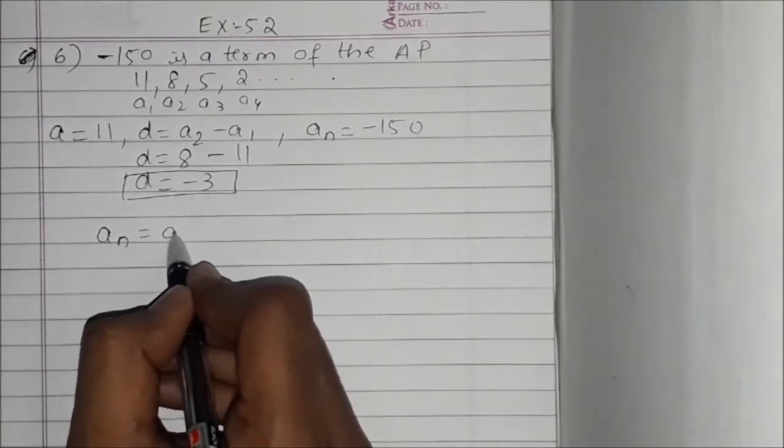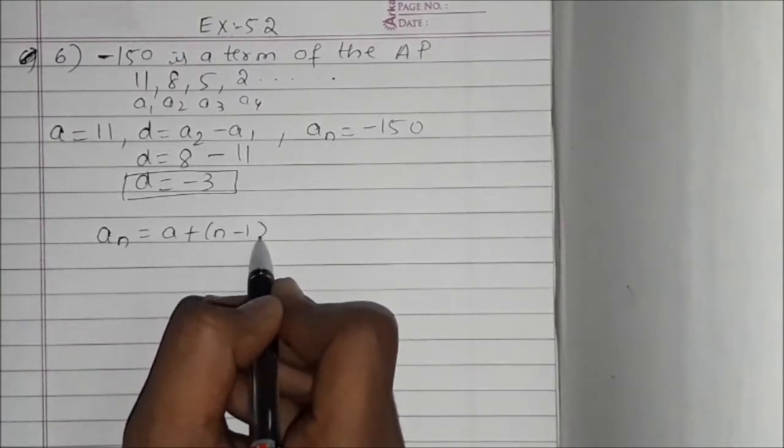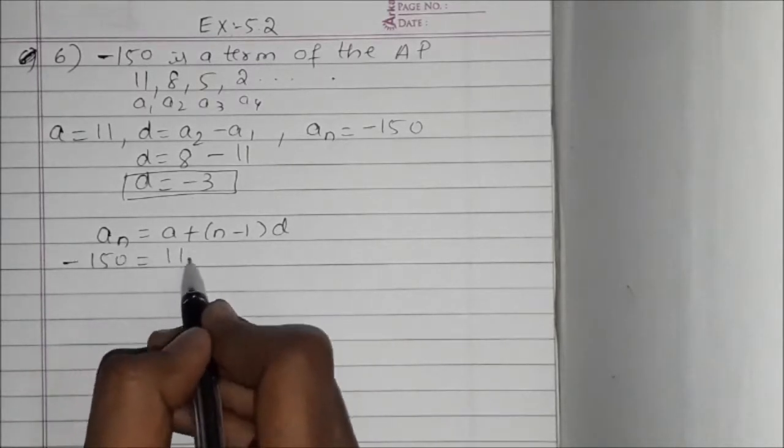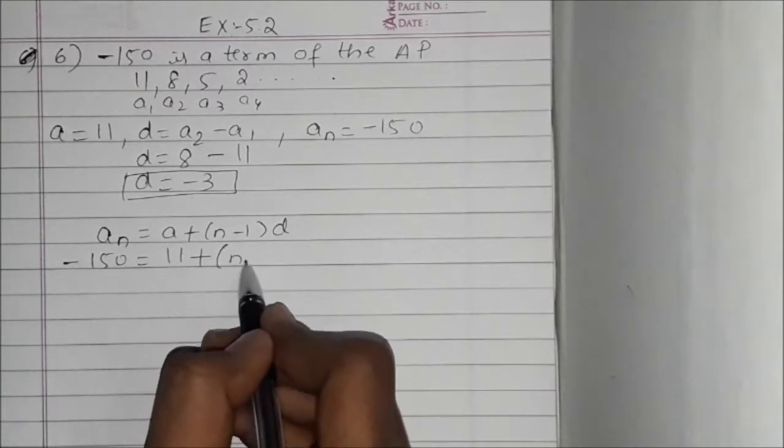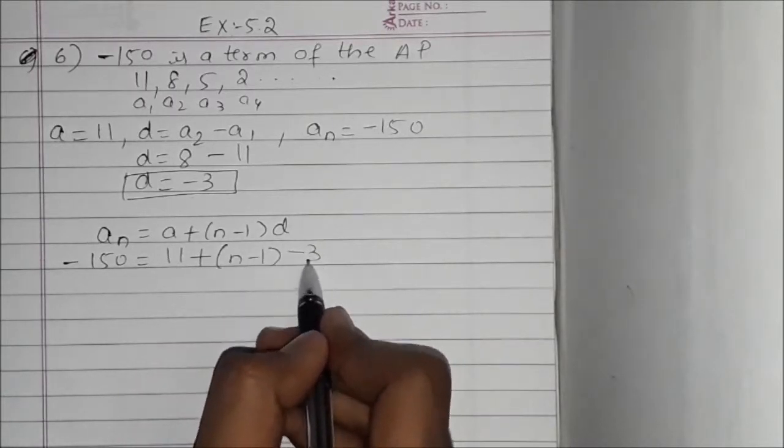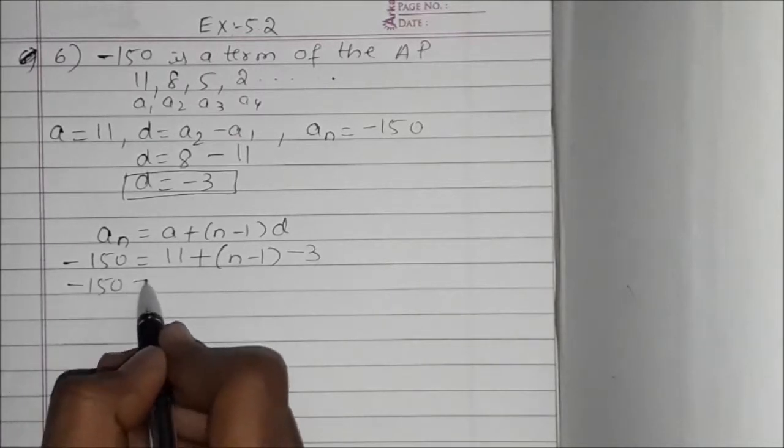Now we know that AN equals A plus N minus 1 into D. AN is minus 150, A is 11, N we have to find out, D is minus 3. Minus 150 equals 11, and 11 plus 3 will be 14 minus 3N.